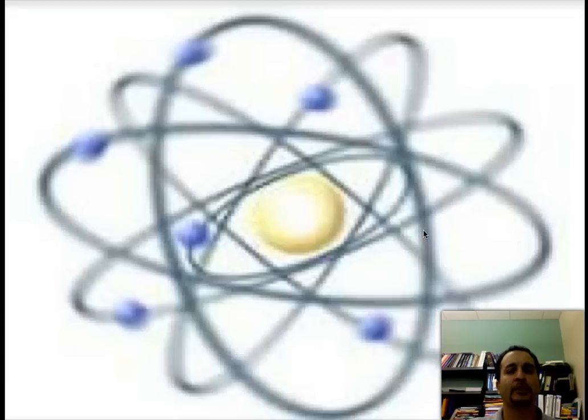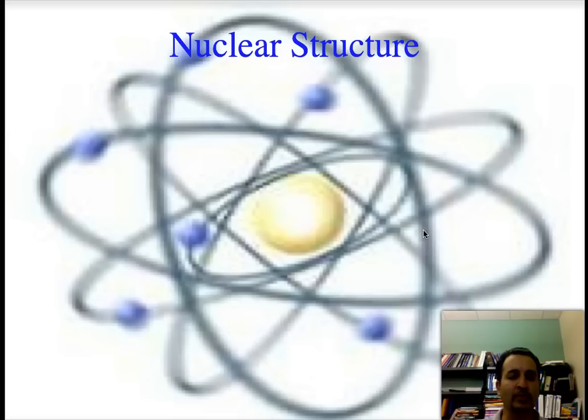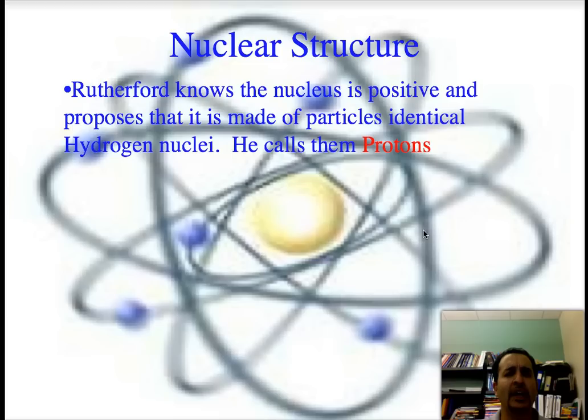Well, from this idea, Rutherford kept on thinking about, now that I have this nucleus and that I know it's positive, I need to find out how it's made. He proposes the idea that the nucleus, instead of being made out of one solid thing, kind of like what Thomson had proposed, he says it's made out of little particles, and each one has a plus one charge. Each one is like the nucleus of a hydrogen atom, which he knows to be the smallest atom. And he calls those particles protons.